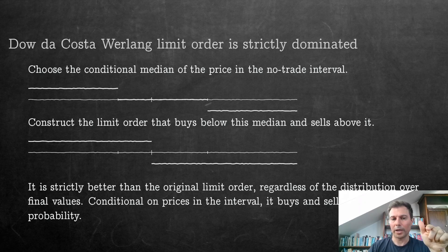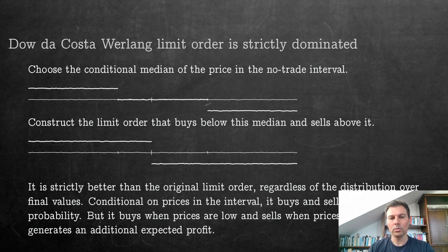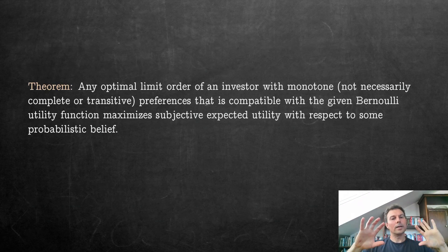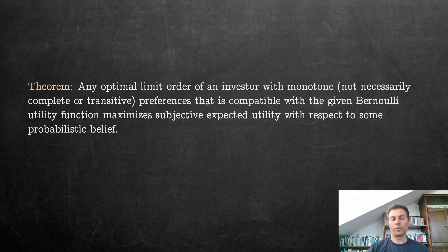But you're not doing this quite, because what you're doing here is you buy when prices are low, because you're only doing it on the left, and you sell when prices are high. And that, one can show, generates really an additional expected profit. This is why the original Dow and Werlang demand function or limit order is strictly dominated by another demand, another limit order, a deterministic limit order. And so this was the example, and this will lead us to the following theorem eventually that you cannot completely yet understand because I haven't given you all the ingredients, but I will repeat it at the end.